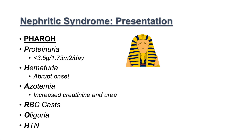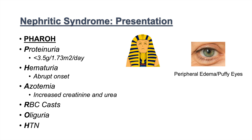So to recap the clinical presentation of nephritic syndrome using PHARAOH: Proteinuria less than 3.5 grams, Hematuria with abrupt onset, Azotemia with increased creatinine and urea, Red blood cell casts, Oliguria, and Hypertension. There are also a couple of other signs and symptoms — a patient can have peripheral edema, puffy eyes, and what is described as smoky urine.